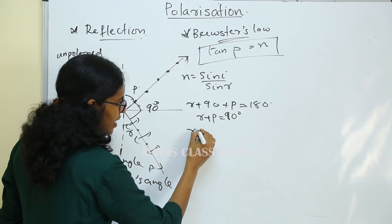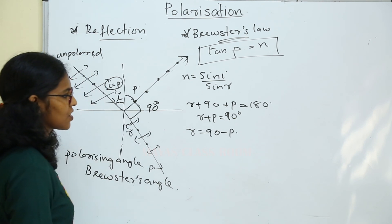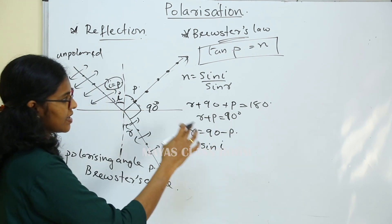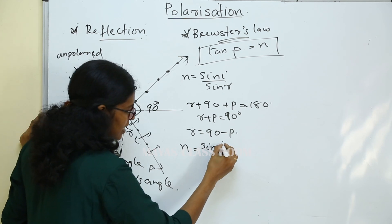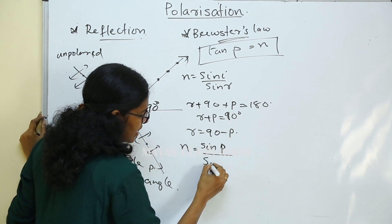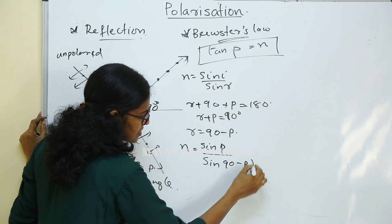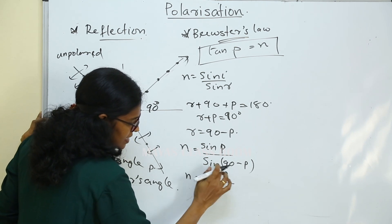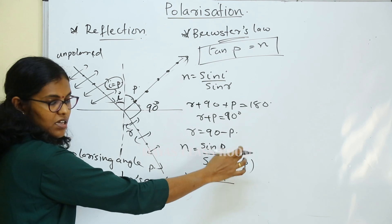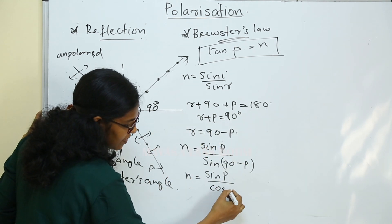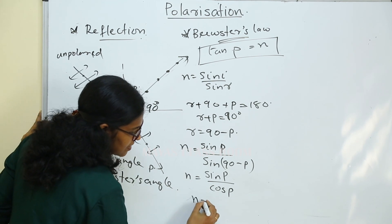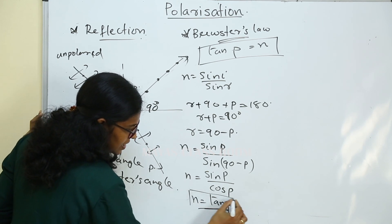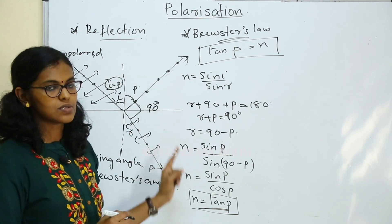Therefore R plus P is equal to 90 degrees. Using Snell's law: n = sin(i)/sin(r), where i equals p, so n = sin(p) / sin(90 - p). Sin(90 - p) equals cos(p), so n = sin(p)/cos(p) = tan(p).